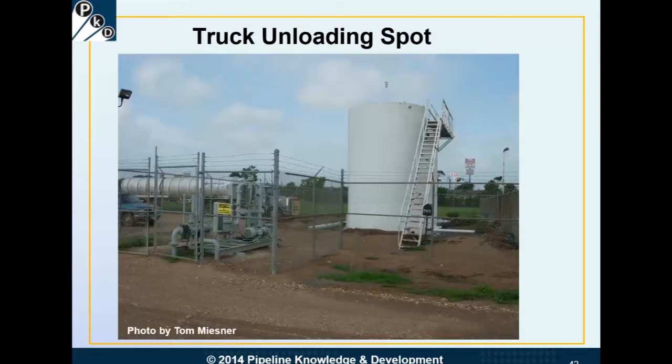Here's another picture of a truck unloading spot. You can see the truck in the background and the automatic custody transfer unit. In this case, the truck driver measured the crude oil when he picked it up at the site, then came over, hooked up, and pumped it off into a small tank without measuring it. They will then pump it from this small tank through the automatic custody transfer unit in the foreground left, into the tanks where the pipeline company will take custody of it.